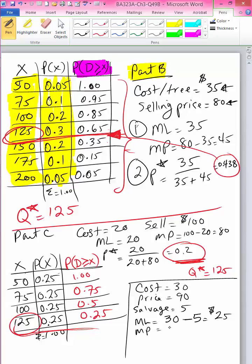My marginal profit, of course, is still going to be the $90 that I could sell it for minus the $30 if I had a tree to sell. If demand is there and I'm able to sell it, I would make $60 of profit. So if I don't have a tree to sell, then my lost profit would be $60.